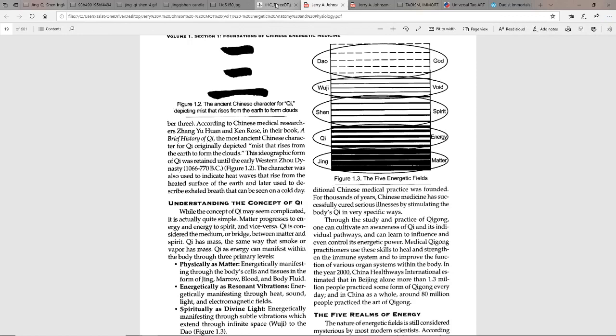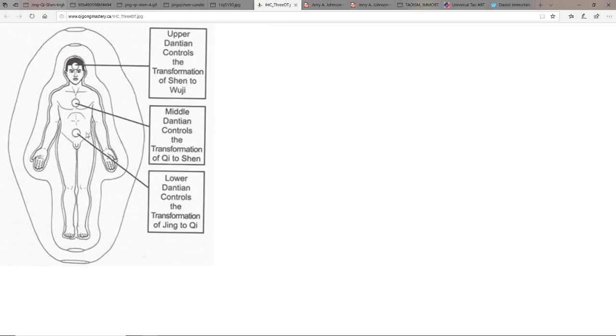When we see here on this figure: lower dantian is jing, middle dantian qi, and then the upper dantian shen. We have the three treasures of jing, qi, and shen. Shen is basically spirit.